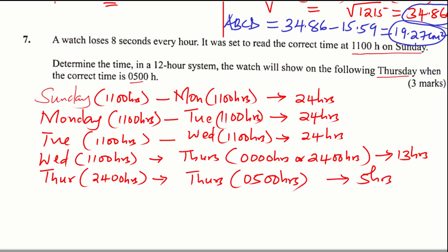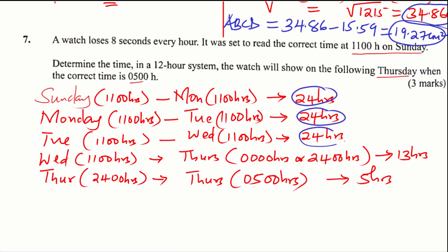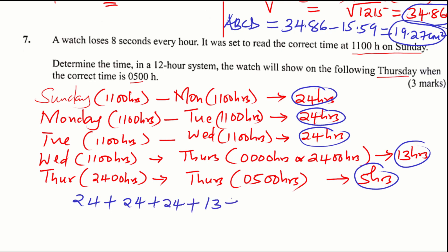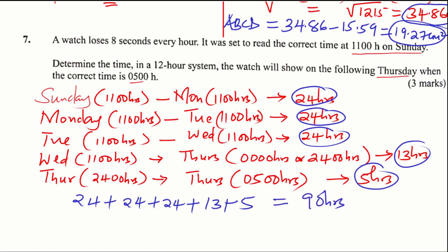So now we have calculated all the hours from Sunday all the way to Thursday. You add everything: 24 plus 24 plus 24 plus 24, plus 13 plus 5. This gives a total of 90 hours.